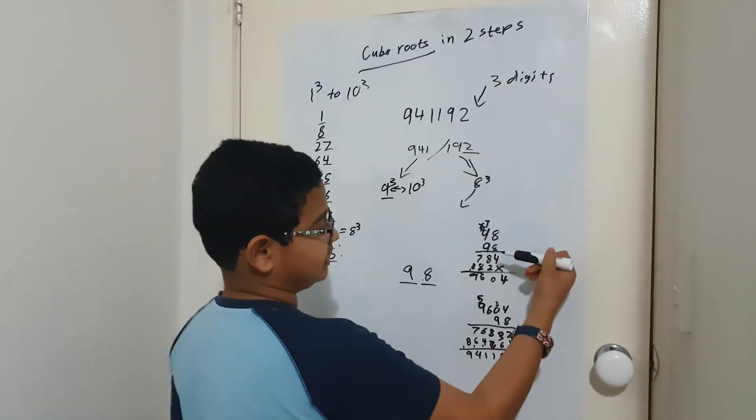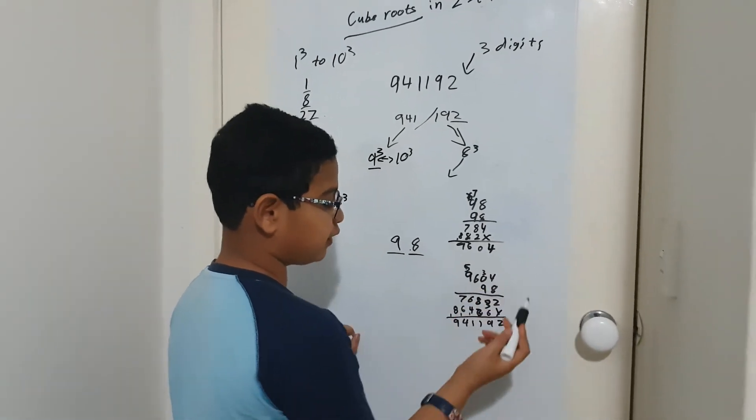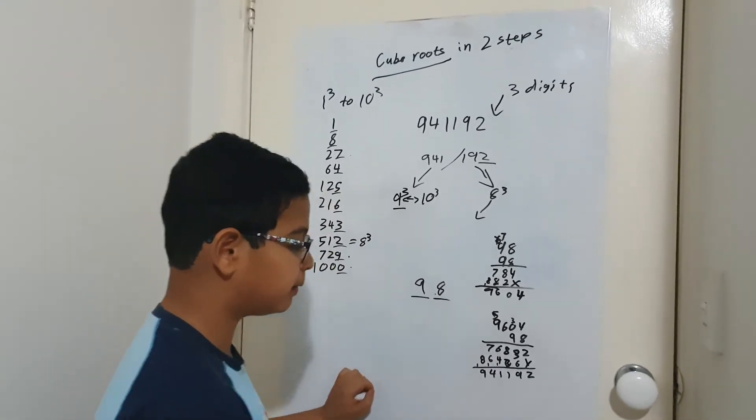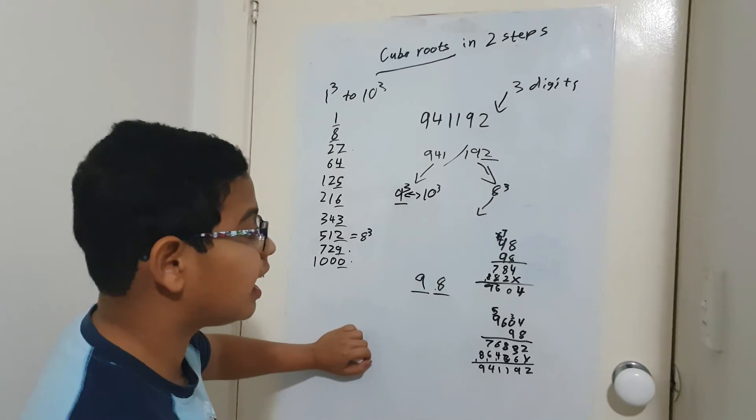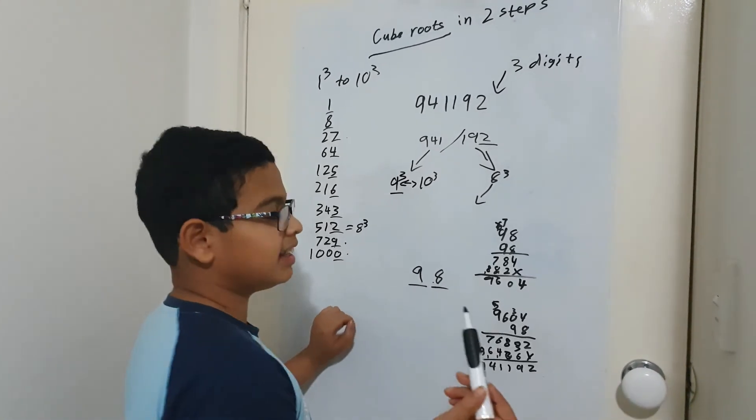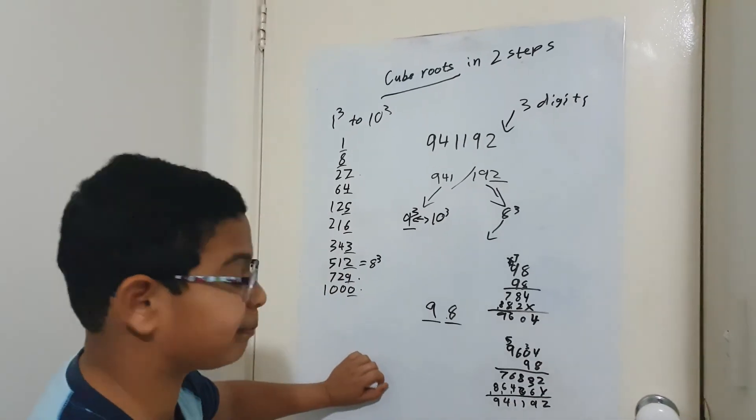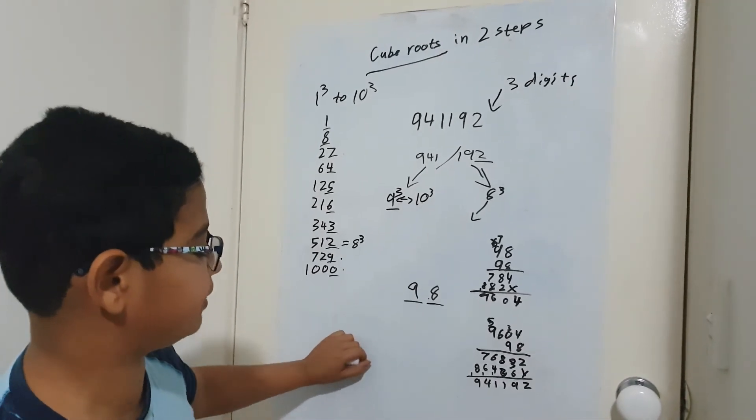Okay, so I did 98 times 98 and I got 9604. 9604 times 98 is 941192. There is also actually a Vedic matrix for cubing a number, but I'll show you that in a later video.